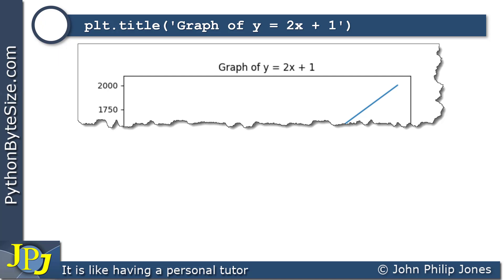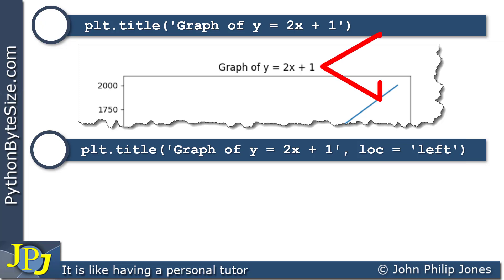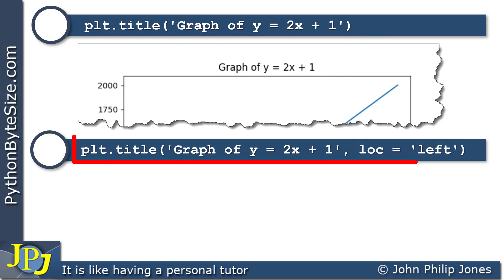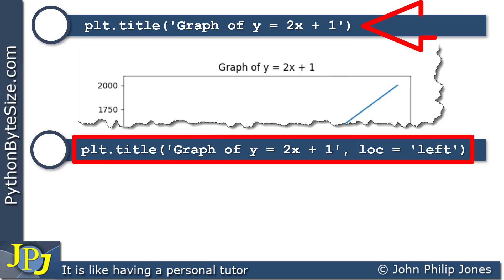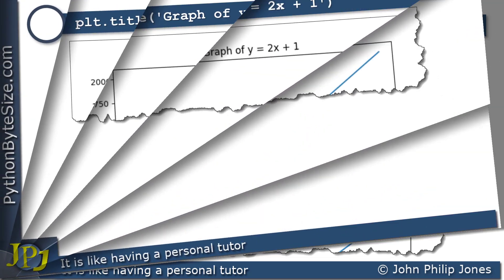There are other arguments we can pass into title. Consider this computer statement here — you can see I'm passing in 'left' to loc, which stands for location. This is going to be the location of the string 'graph of y equals 2x plus 1', which you can see here is in the center of the graph. If I now amend the program and place this in instead, what you will see at the output with reference to the title is that the position of the string has been moved to the left.